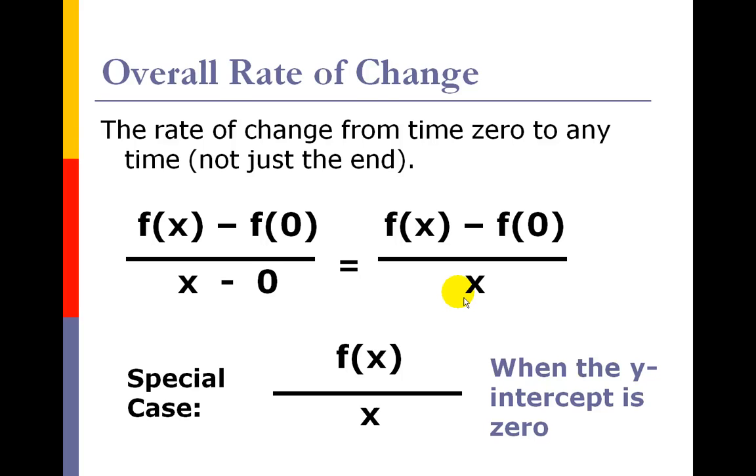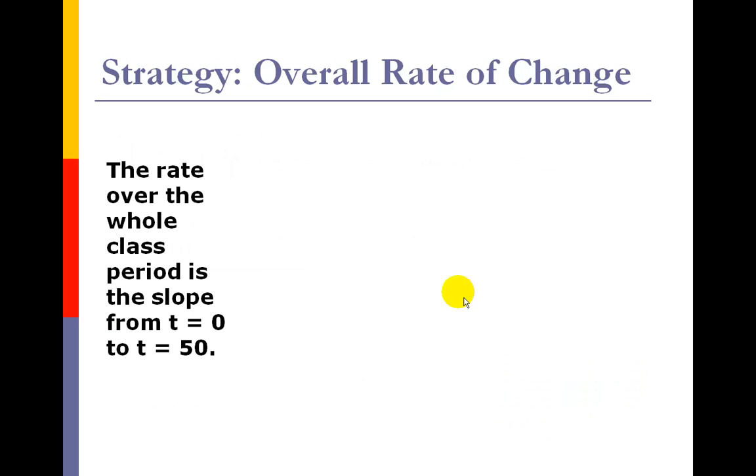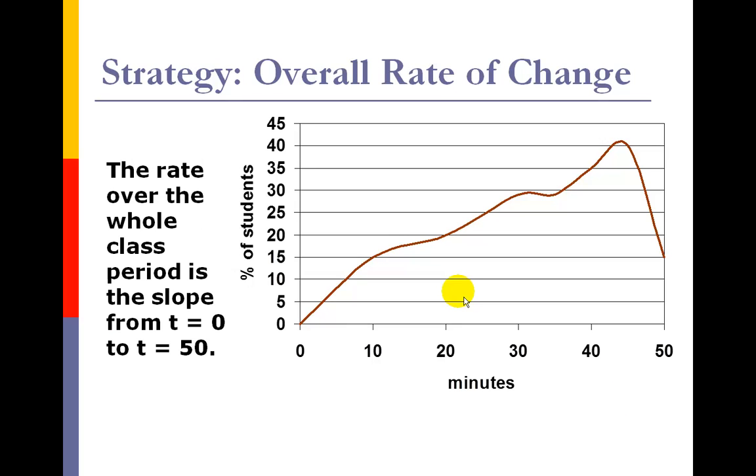It's basically the slope formula with the special point times zero. And in a special case, you actually get it as f of x over x when the y-intercept is zero. Okay, so now how is this used in the example that I showed? Well, I was looking for the overall rate of change from time zero to time 50. And what we get is the slope of this line right here. Now, you might be thinking, wait a minute, that's a terrible slope to use. Because from time zero to time 50, that incorporates this down line.